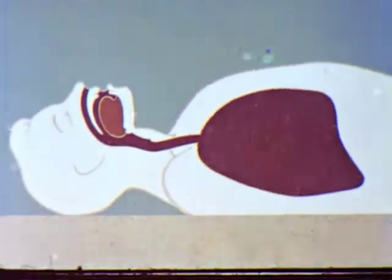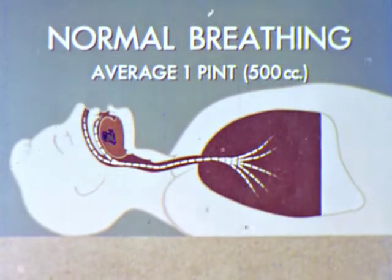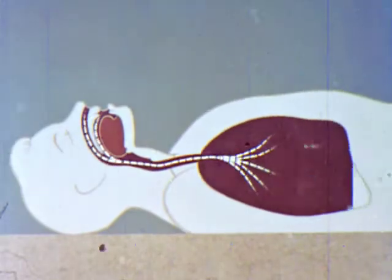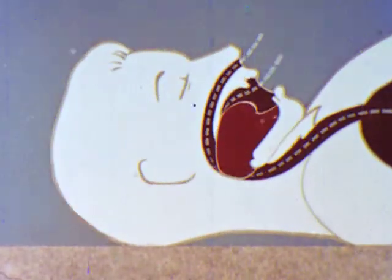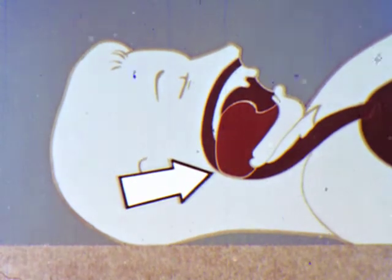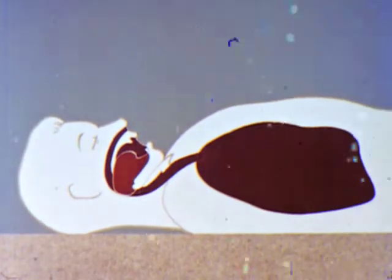Yet most victims of asphyxia could be revived if sufficient air could be gotten into their lungs without delay. This diagram shows what happens in normal breathing. An average conscious adult quietly inhales about one pint or 500 cubic centimeters of air per breath. In an unconscious person, the neck usually bends forward and the jaw sags, which tends to push the tongue over the air passageway and block it. Asphyxia develops because less and less air can get through to the lungs.